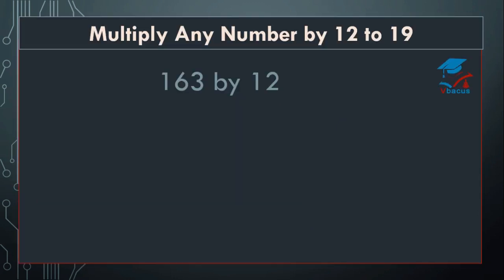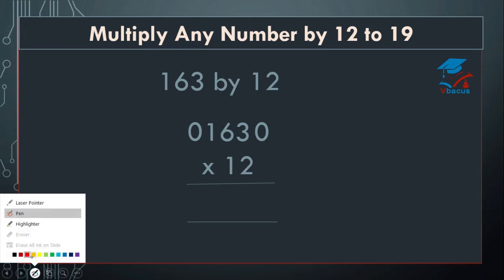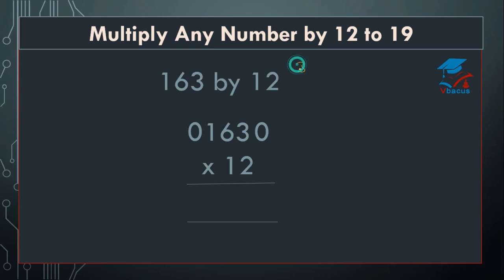Multiply any number by 12 to 19. Let's take the first example: multiply 163 by 12. As we know, and we have learnt for multiplying by 11, you have to insert a 0 on the right hand side and a 0 on the left hand side, and start multiplying by 2. So, multiply 3 by 2 — that is 6 plus 0, which equals 6. Write 6 and cut the 0.